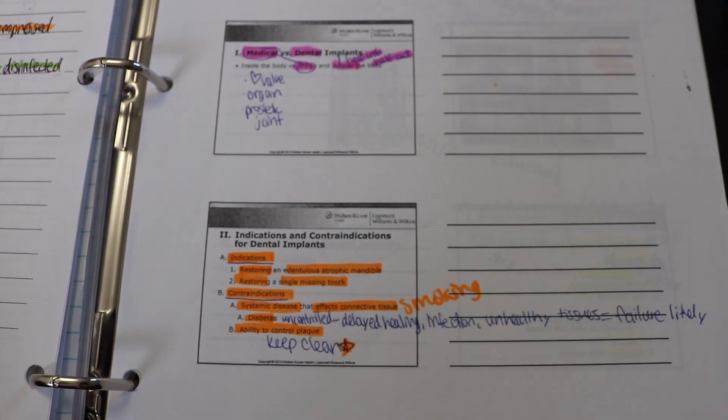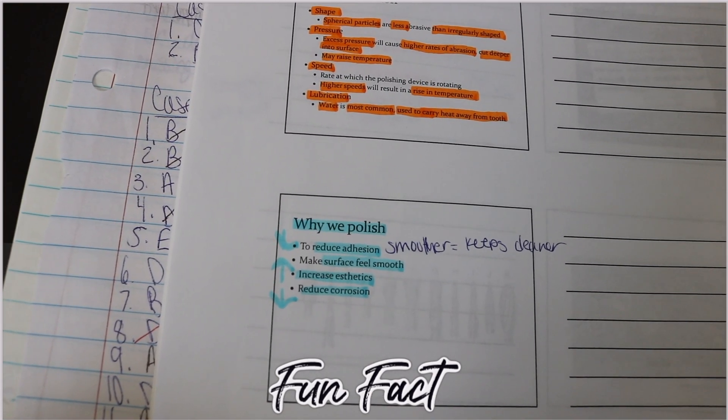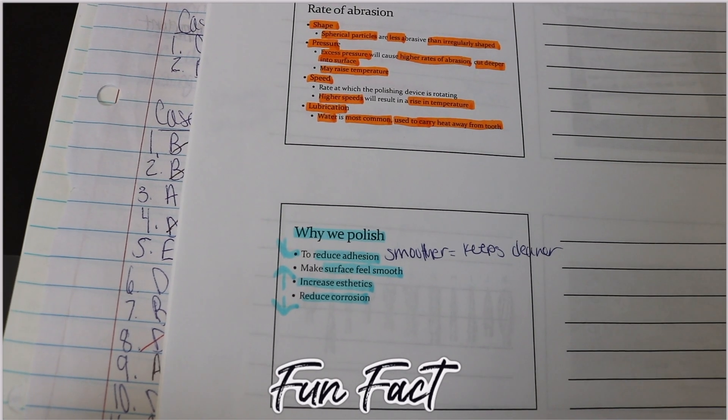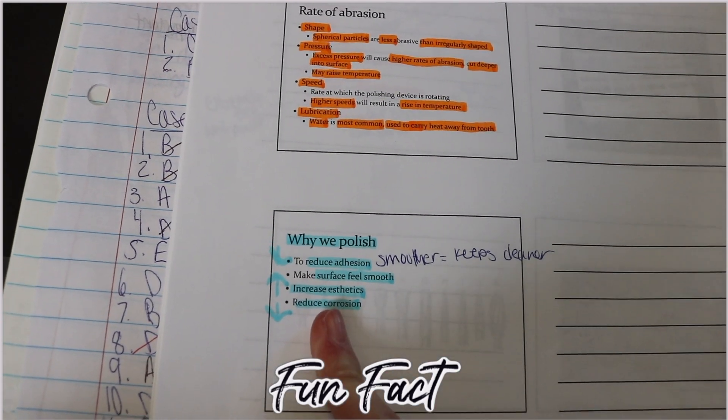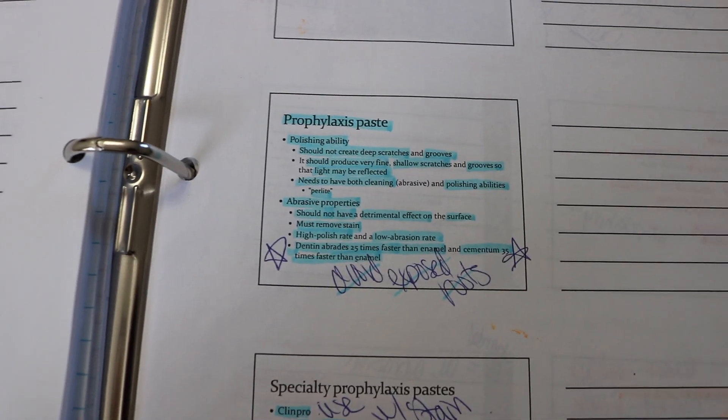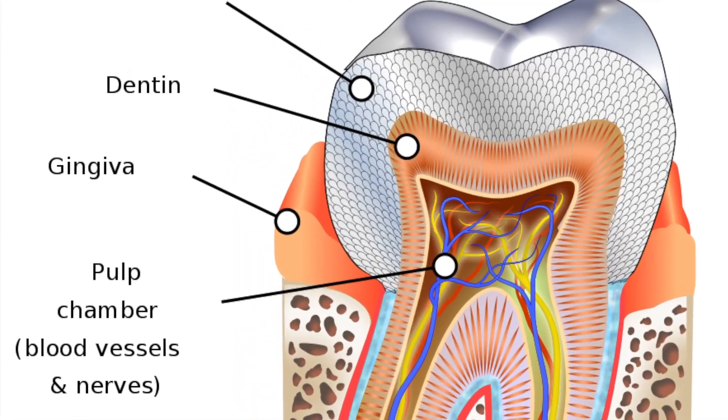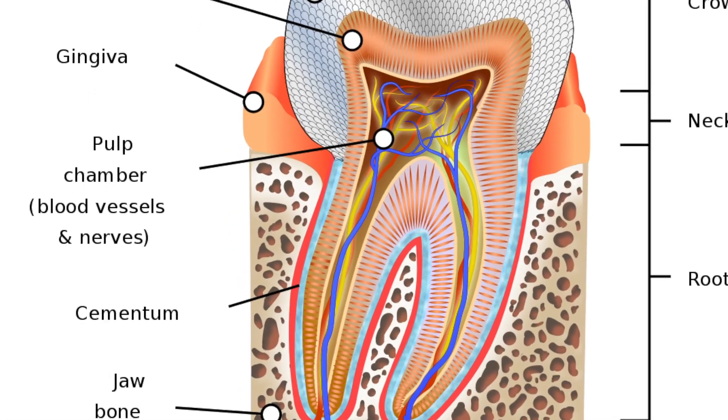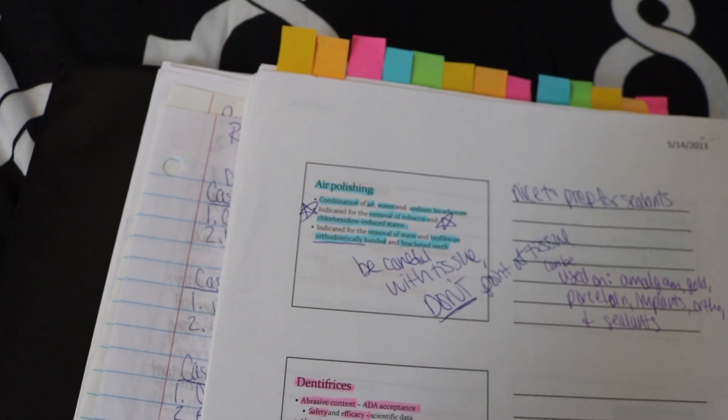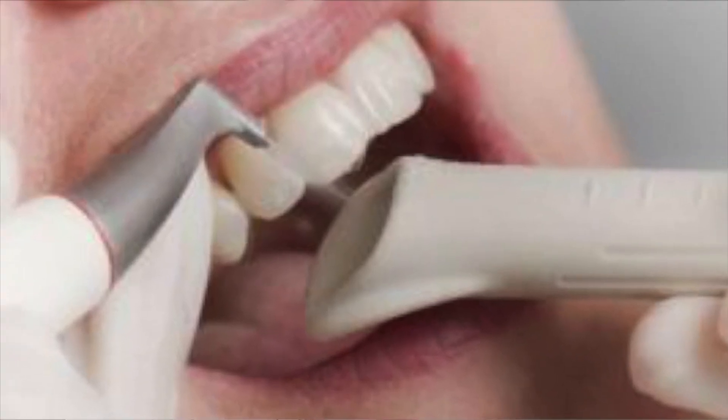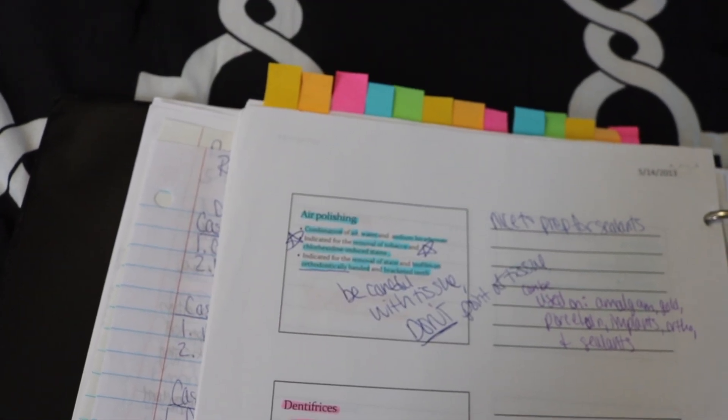Here's some fun facts, so why do we polish your teeth? We polish your teeth to reduce adhesion so we want to make them smoother so that less things are able to stick to it, we want to increase the aesthetics and reduce corrosion. So something that we have to be really careful of is the dentin and the cementum. The dentin abrades 25 times faster than enamel and cementum is 35 times faster than the enamel. We can also do something called air polishing which is a combination of air, water and sodium bicarbonate. This is really nice for removing tobacco and chlorhexidine induced stains or also for cleaning around orthodontic brackets.